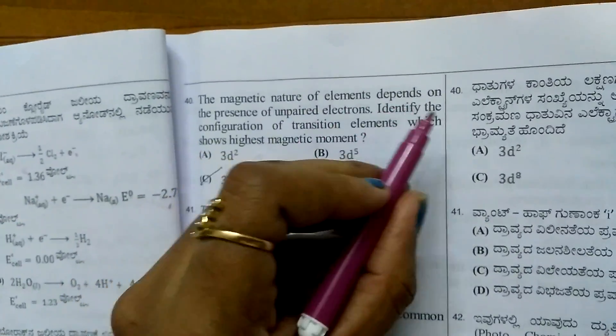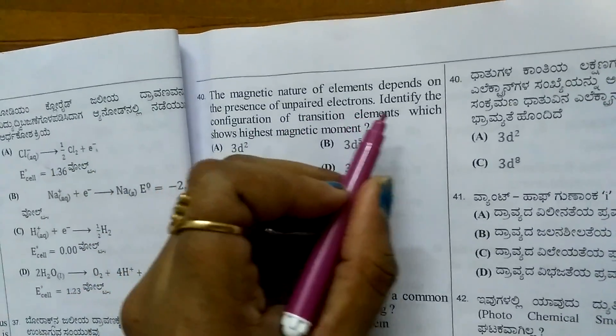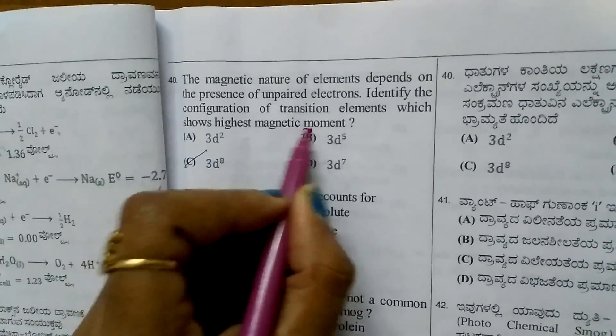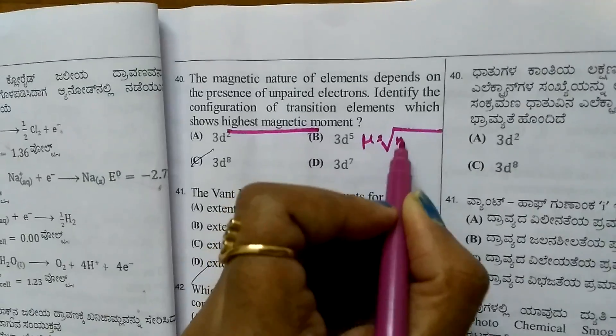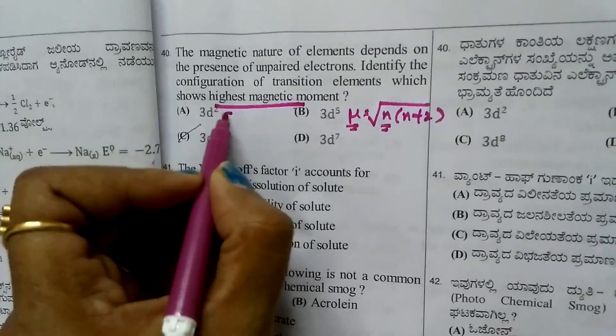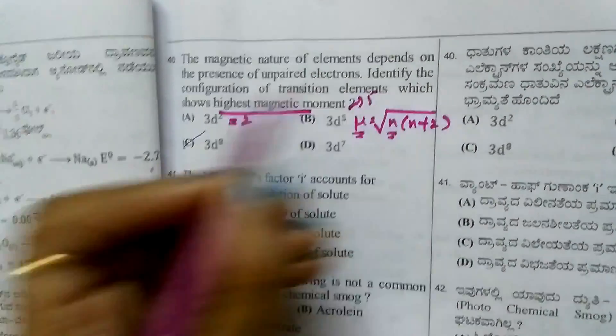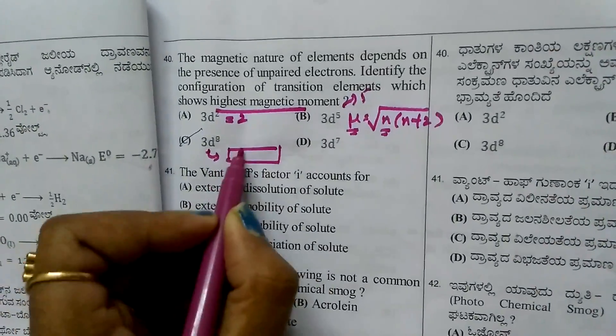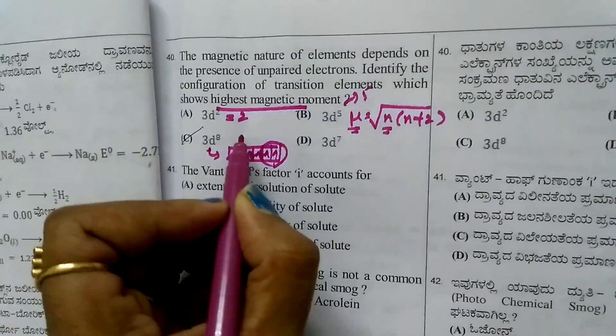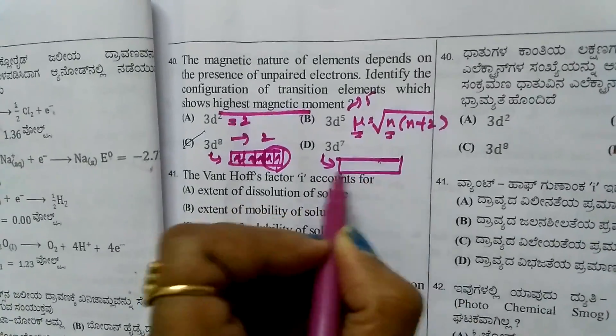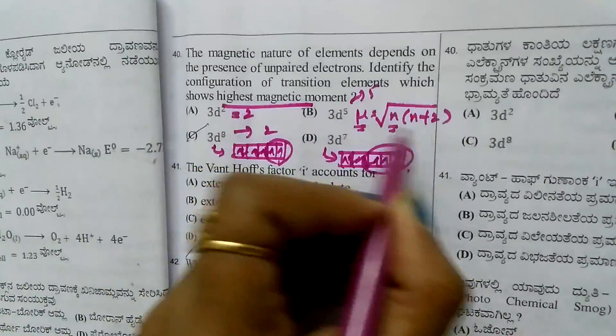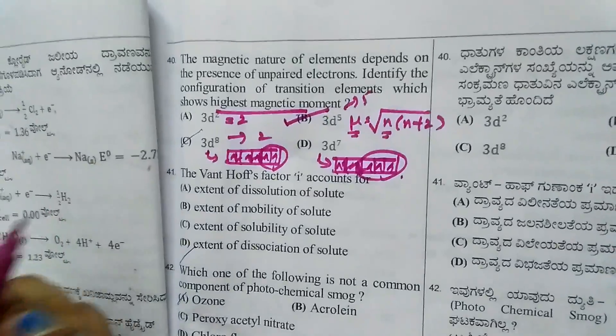Question 39: Magnetic nature depends on unpaired electrons. Identify configuration showing highest magnetic moment. Magnetic moment μ = √(n(n+2)). More unpaired electrons means more magnetic moment. The configurations have 2, 5, 8 (which pairs to 2), 2, and 3 unpaired electrons. D5 has 5 unpaired electrons, showing highest magnetic moment.